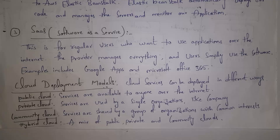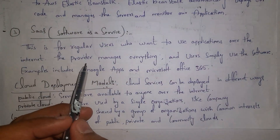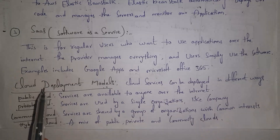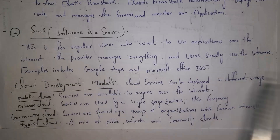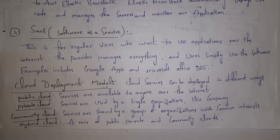The third one is Software as a Service — shortly we call it SaaS. SaaS is for regular users who want to use applications over the internet. The provider manages everything and users simply use the software. Examples include Google Apps and Microsoft Office 365. With SaaS, providers give both hardware and various kinds of applications based on our requirement. For example, if I want to use MS Office in the cloud, I simply select a SaaS service, select a server, select the MS Office application, and use it.